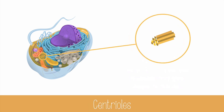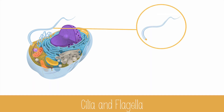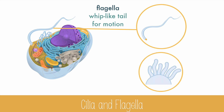Centrioles are short cylinders of microtubules that exist in pairs and are used in animal cells to organize microtubules during cell division, so that the chromosomes will divide evenly. This cell image has a flagella, which is a long, whip-like tail for motion, but it doesn't have any cilia. Cilia are smaller versions of flagella, and they can be used for propulsion or as a way to increase surface area for things like absorbing food in your intestines.